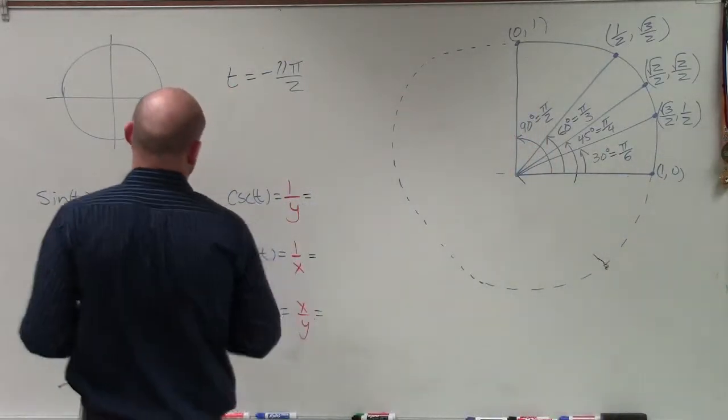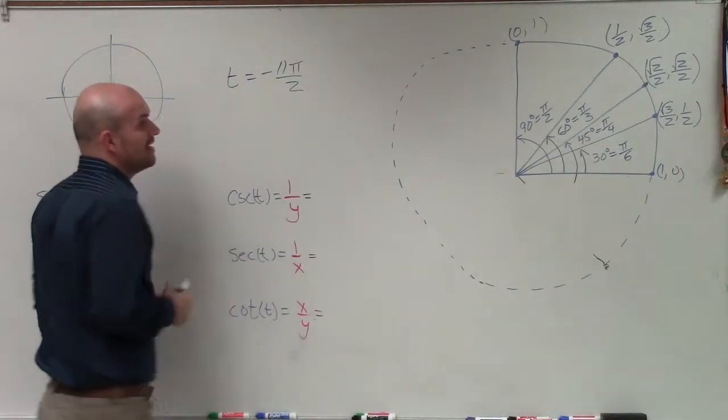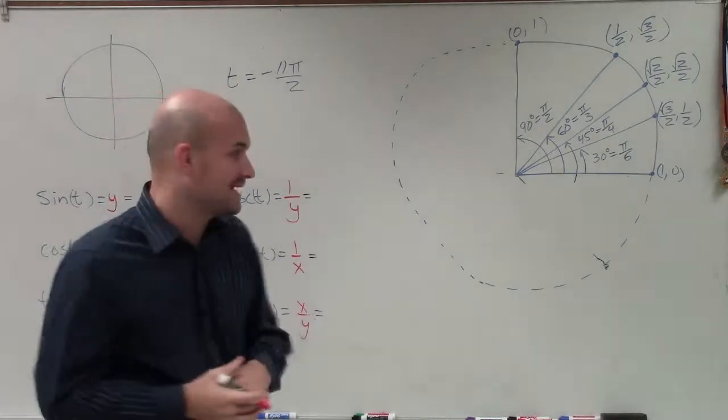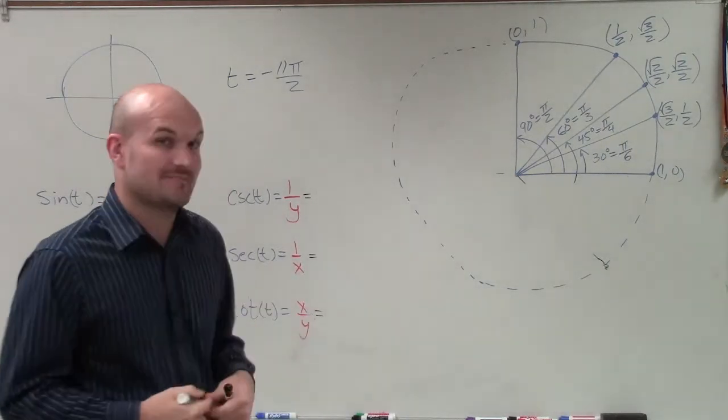Welcome. So what I have here is negative 11 pi over 2, and what I want to show you how to do for this problem is evaluate our six trigonometric functions.